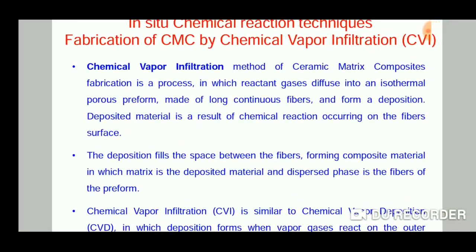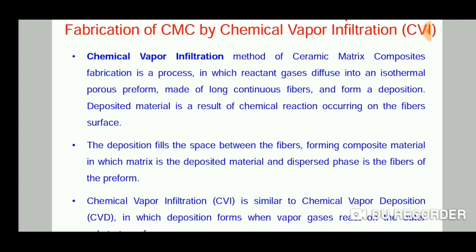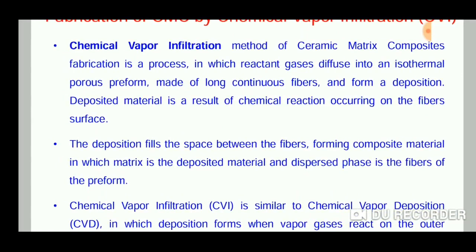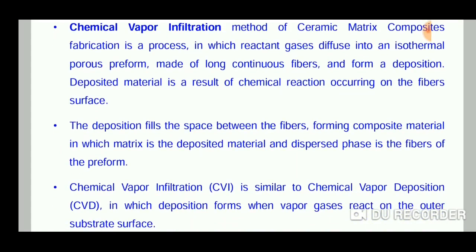Chemical vapor infiltration method of ceramic matrix composites fabrication is a process in which the reactant gases diffuse into a preform which is made up of long continuous fibers, or sometimes flakes or discontinuous fibers. This material is a result of chemical reaction occurring on the fiber surface. The deposition fills the space between the fibers forming the composite material.